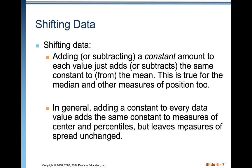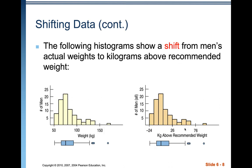Adding a constant to every data value adds the same constant to the measures of center and percentiles, but leaves the measures of spread unchanged — there's no greater distance between the smallest and largest value. The following histograms show a shift from men's actual weights to kilograms above recommended weight. Some people are below recommended weight, and some are above. The shape does not change, the spread does not change, but the center certainly changes.